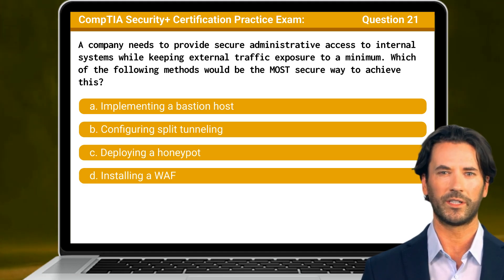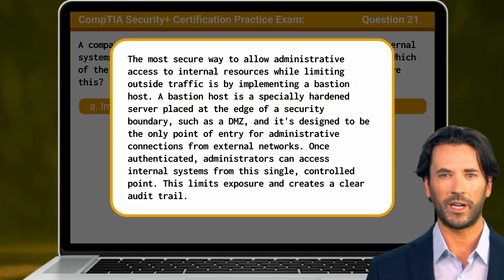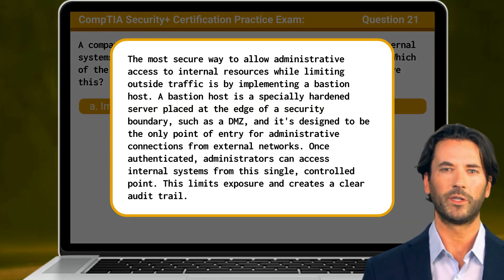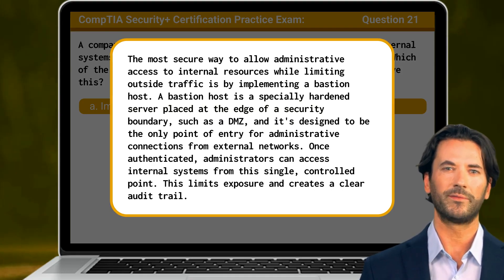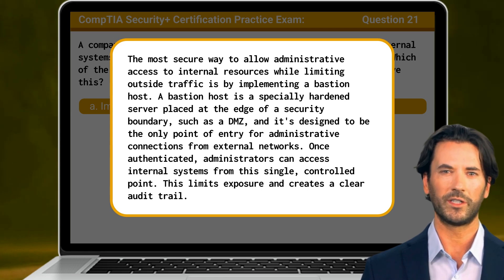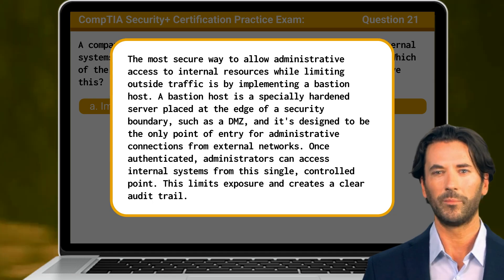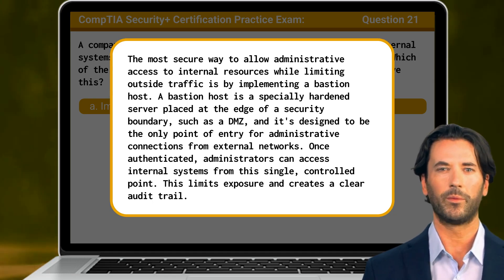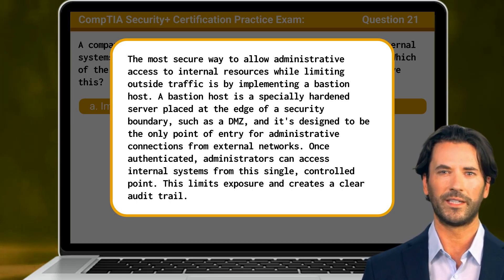The answer is A: implementing a bastion host. The most secure way to allow administrative access to internal resources while limiting outside traffic is by implementing a bastion host. A bastion host is a specially hardened server placed at the edge of a security boundary, such as a DMZ, and it's designed to be the only point of entry for administrative connections from external networks. Once authenticated, administrators can access internal systems from this single control point. This limits exposure and creates a clear audit trail.